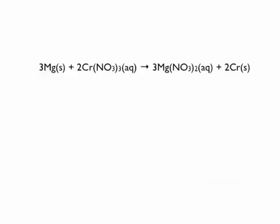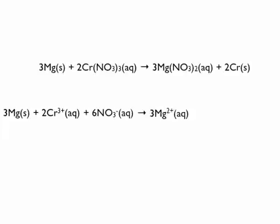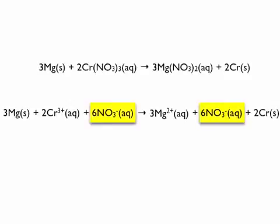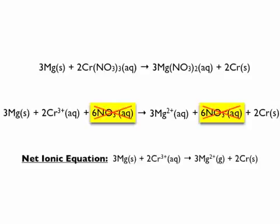Now we can write the complete and net ionic equation. Magnesium solid remains the same in the complete ionic equation. Chromium 3 nitrate dissociates into chromium 3+ ions and nitrate ions. Magnesium nitrate dissociates into magnesium 2+ and nitrate minus. Chromium remains as a solid. We then identify the spectator ions, which are the nitrate ions. Canceling them gives the net ionic equation: 3 Mg + 2 Cr³⁺ → 3 Mg²⁺ + 2 Cr.